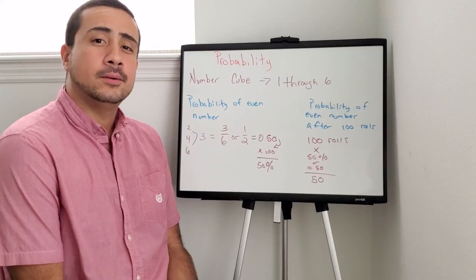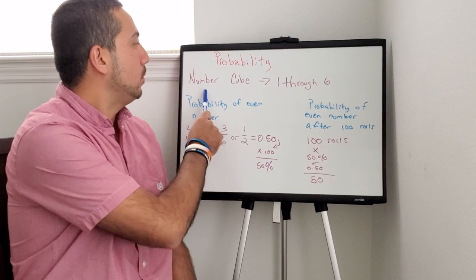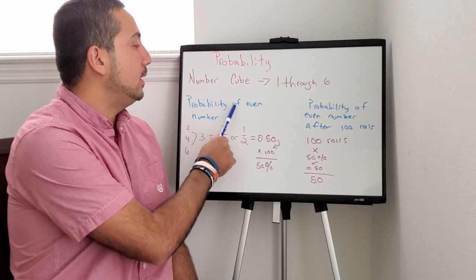All right, let's break down this probability a little bit further. So we'll go with the number cube again 1 through 6. So if I told you what's the probability of an even number coming up?